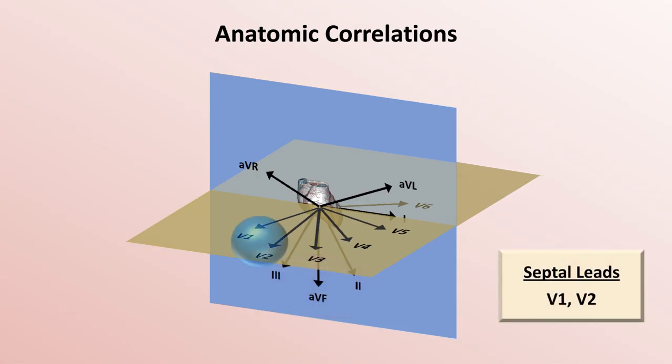V1 and V2 are known as the septal leads as they lie over that structure. V1 and V2 also lie over the right ventricle and are the primary leads to examine when right ventricular pathology is suspected.